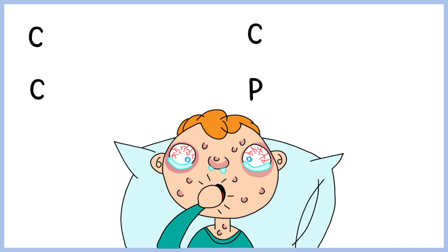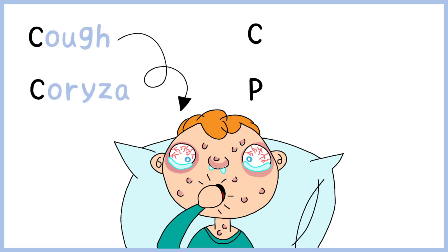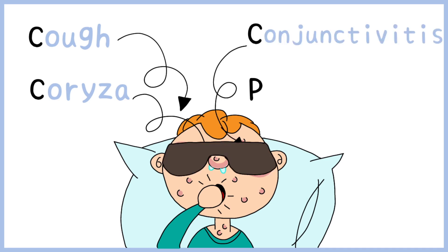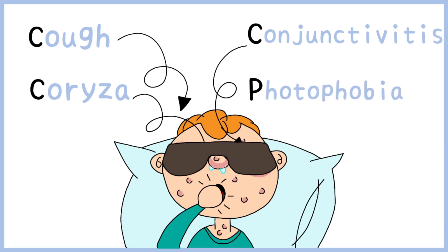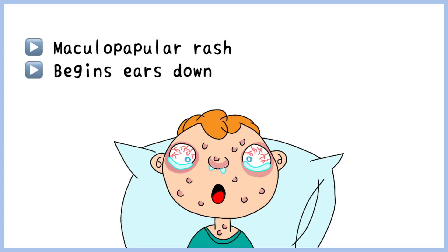You can easily remember there are three C's and one P. Since it spreads through the respiratory route, the first symptom is cough, accompanied by coryza or a runny nose. The third C stands for conjunctivitis and P stands for photophobia. The skin lesions that appear are a maculopapular rash made up of large, flat blotches that often flow into one another.